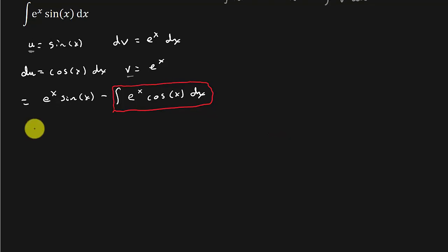Okay, so I'm going to let u equal, let's change colors. I'm going to let u equal cosine x, and dv equal e to the x dx. So du is negative sine x dx, and v is e to the x.